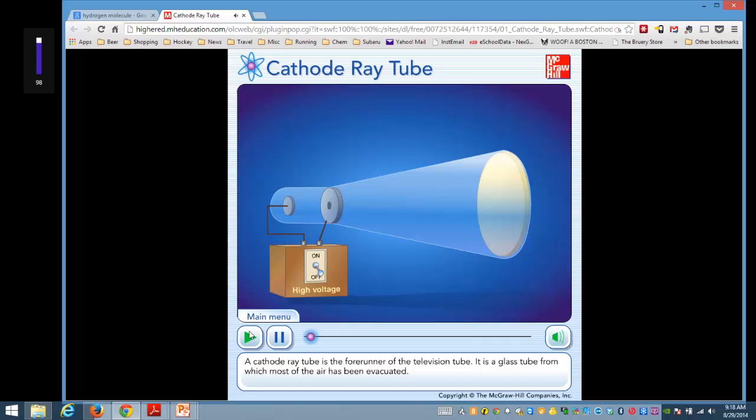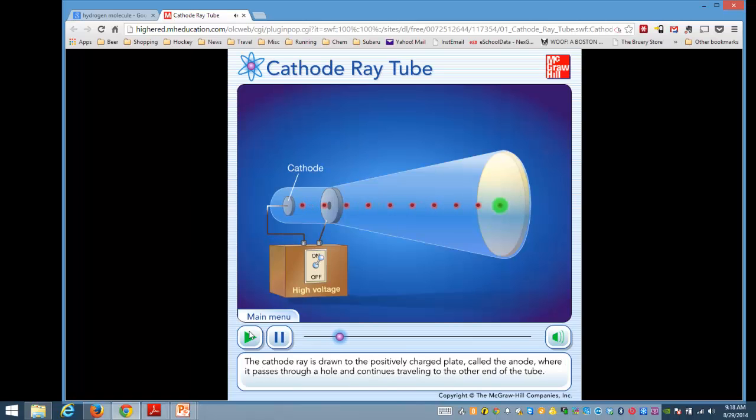A cathode ray tube is the forerunner of the television tube. It is a glass tube from which most of the air has been evacuated. When the two metal plates are connected to a high voltage source, the negatively charged plate, called the cathode, emits an invisible ray. The cathode ray is drawn to the positively charged plate, called the anode, where it passes through a hole and continues traveling to the other end of the tube. When the ray strikes this specially coated surface, the cathode ray produces a strong fluorescence, or bright light.